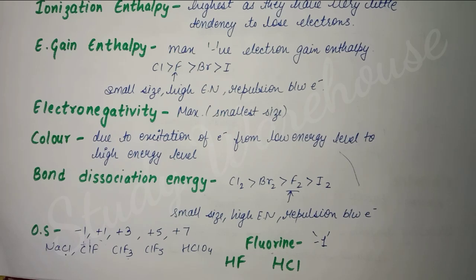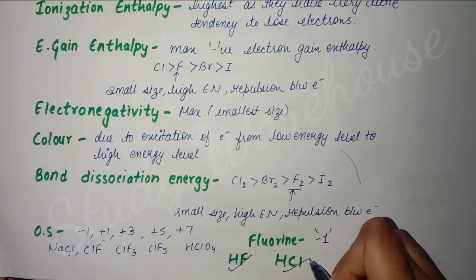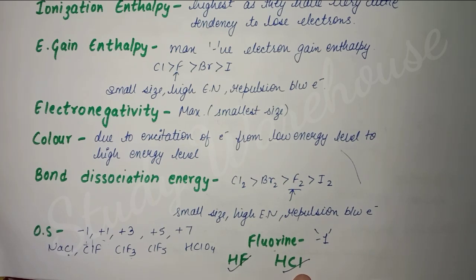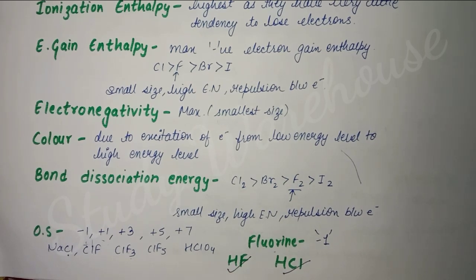Next we'll see interhalogen compounds. Here also, if a more electronegative element is combined with another element, its oxidation state goes positive, but the more electronegative element always remains negative. Another question asked is why HF is a liquid but HCl is a gas. The simple reason is due to the presence of hydrogen bonding in HF which is absent in HCl. HF has hydrogen bonding, so this bond is strong with greater attraction force, which is why it exists as a liquid. Whereas in HCl there is no hydrogen bonding, so molecules are away from each other and it exists as a gas.